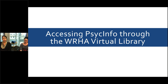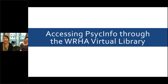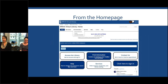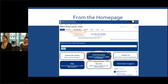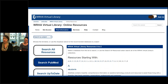I'm going to talk about how you access PsycINFO through the WRHA Virtual Library. If you Google us you'll find it — it's pretty easy to find. This is our homepage. There are two ways to access our databases from this page: at the top there's a 'Find Information' tab with an 'Online Resources' sub-tab, and there's also a big 'Find Information' button in the middle of the page. Either way, click through to online resources.